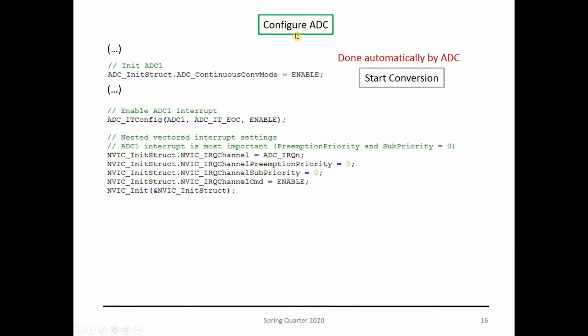Let's see the code. It doesn't change much on your ADC—it's pretty much the same code you saw previously. The only difference is now I'm setting continuous mode to enable instead of disable. The minute I do this, the start conversion is done automatically. Then I'm setting up the NVIC so the ADC can work with interrupts: I point to the right interrupt handler, set priorities to zero, and enable the channel command. That's it for configuring the ADC.